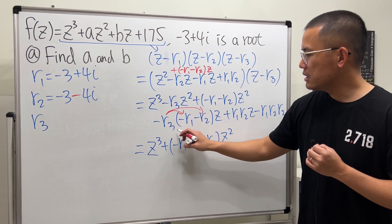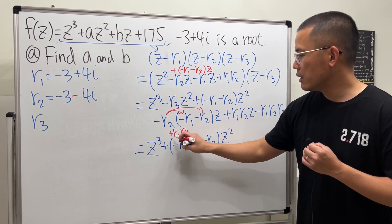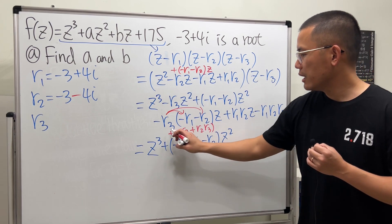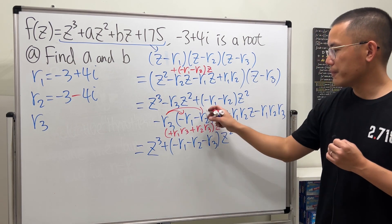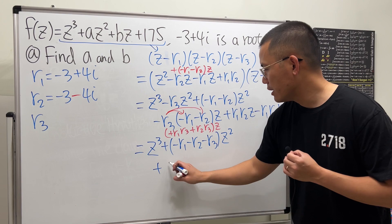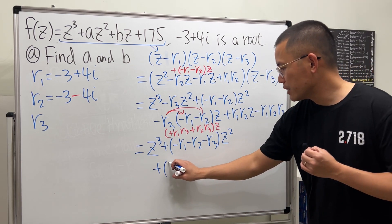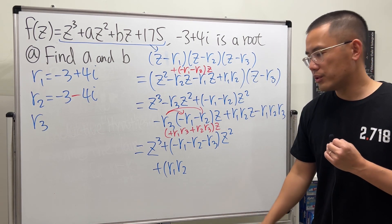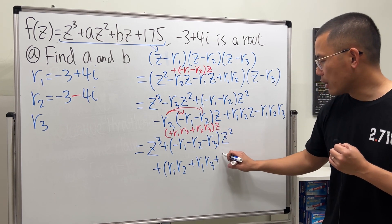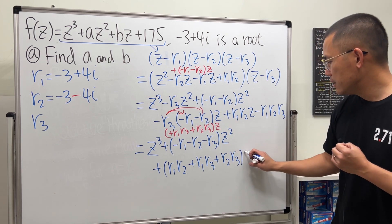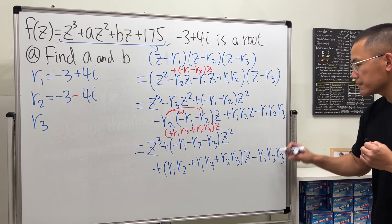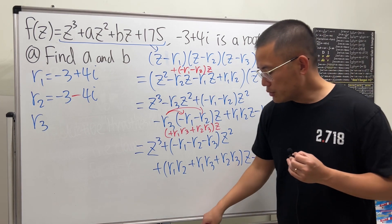Distributing gives positive r1·r3 and positive r2·r3, with those terms carrying z. The full expansion is: z³ + (−r1−r2−r3)z² + (r1·r2 + r1·r3 + r2·r3)z − r1·r2·r3. This tells us the relationship between the roots and the coefficients.